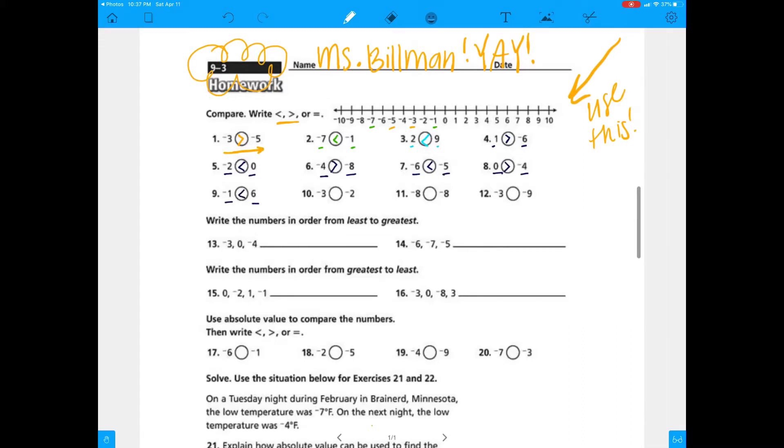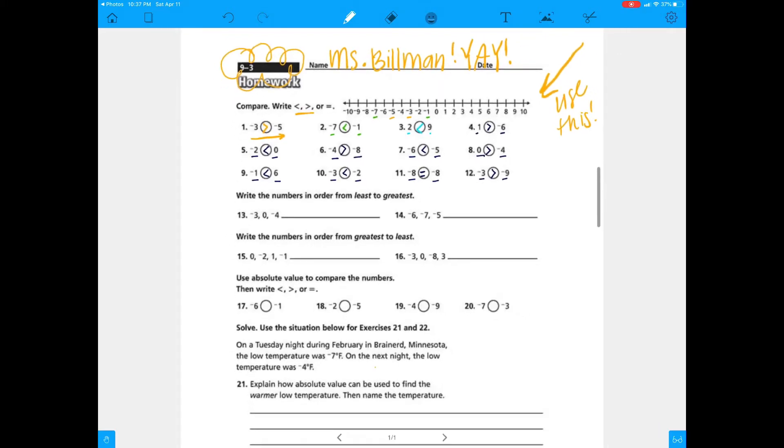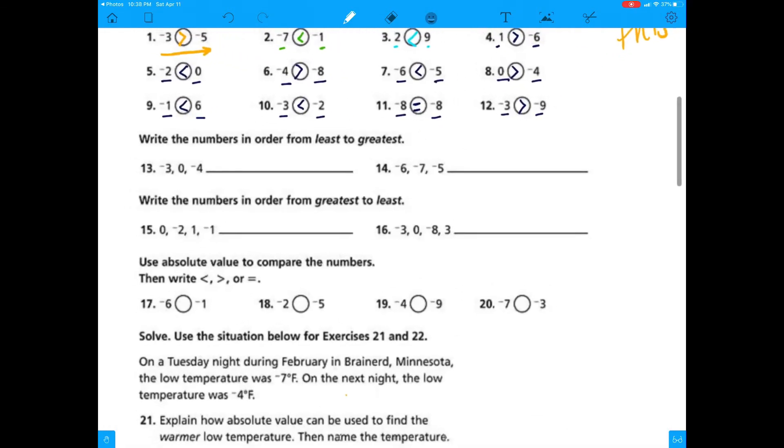Number 5, negative 2 is less than 0. Number 6, negative 4 is greater than negative 8. Number 7, negative 6 is less than negative 5. Number 8, 0 is greater than negative 4. Number 9, negative 1 is less than 6.